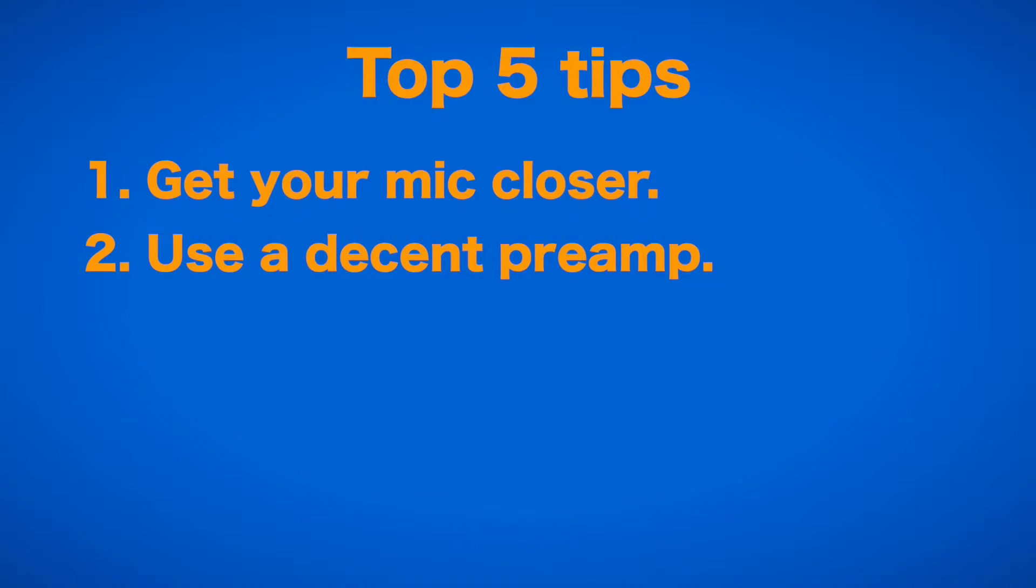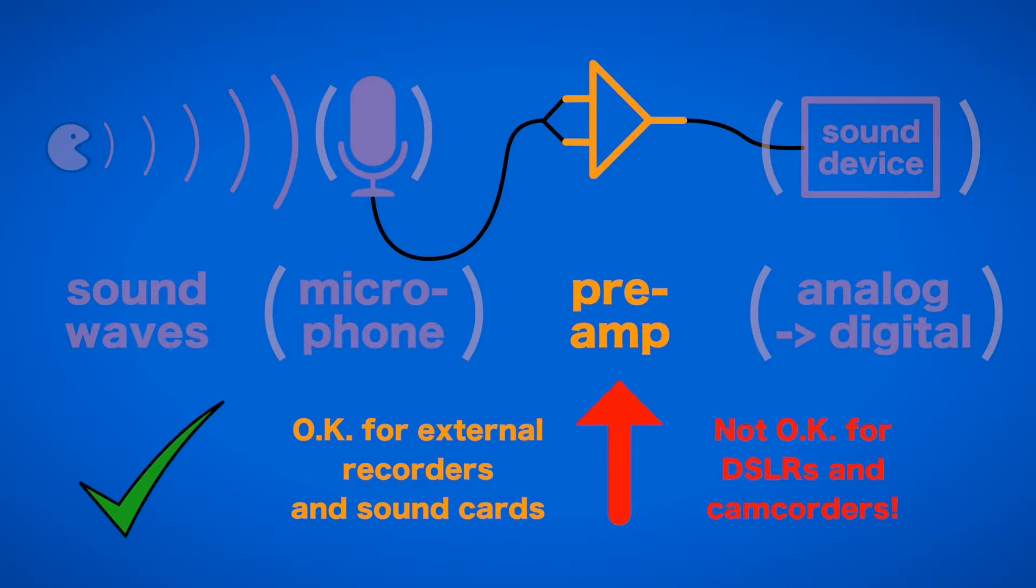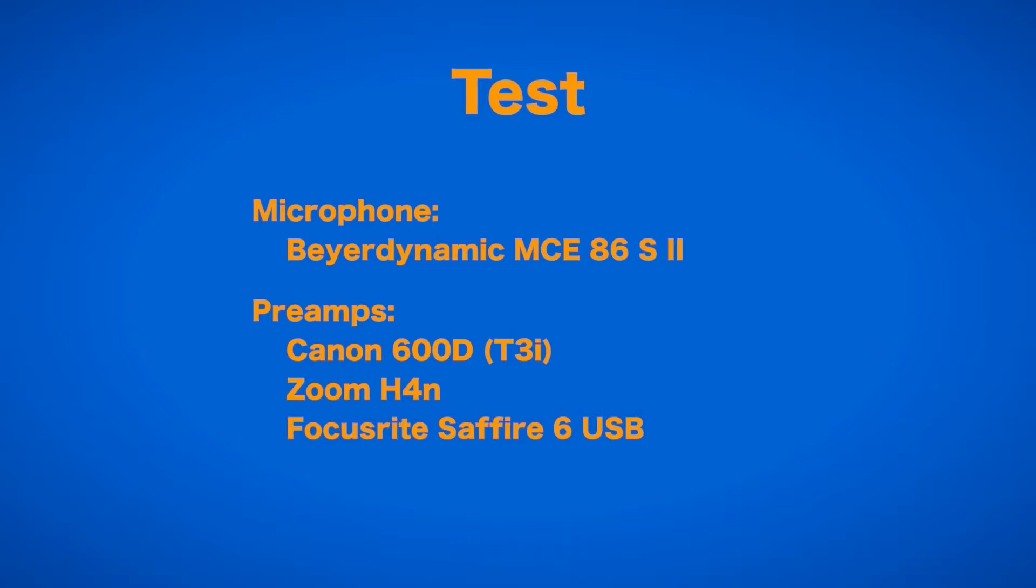The second tip is, use a decent preamp. While there certainly is a difference in recording quality of different microphones, the very good microphones don't come cheap. And far more important for the signal to noise ratio actually is the quality of your preamplifier. Most dedicated recording devices offer a pretty usable preamp, but sadly most DSLRs and camcorders don't. You can hear the vast difference in this example, where the same microphone at the same distance is run into three different preamps.